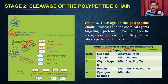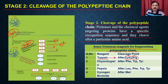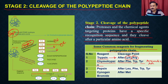If you treat the protein with trypsin, it cuts wherever you have lysine or arginine, generating different types of fragments. Similarly, chymotrypsin cleaves the peptide after phenylalanine, tryptophan, or tyrosine — after aromatic amino acids. Pepsin cleaves the polypeptide chain after leucine, phenylalanine, tryptophan, or tyrosine.